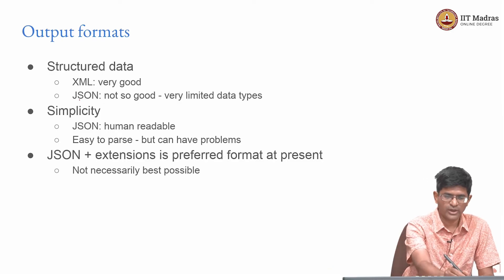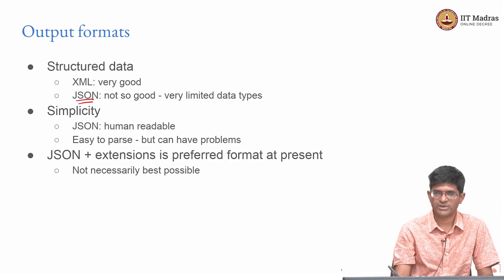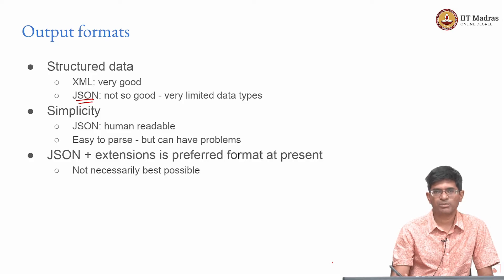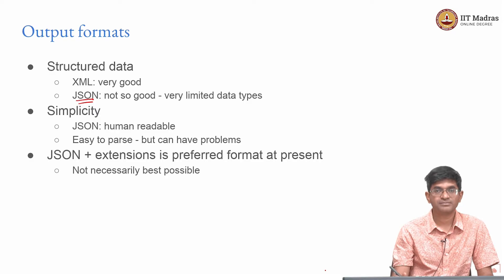Therefore, the popular choice today is JSON — JavaScript Object Notation. It has limitations, for example strict restrictions on the types of data you can specify, and you cannot directly indicate class types in JSON itself — you need intelligence in the system to interpret the data. But it is very simple, human readable, you can almost write it out by hand, and it is also very easy to parse in most languages. The consensus is that JSON plus a few extensions are the preferred format at present.